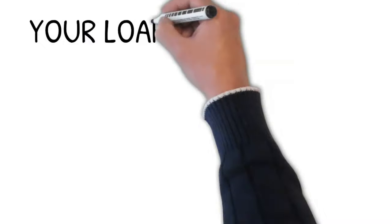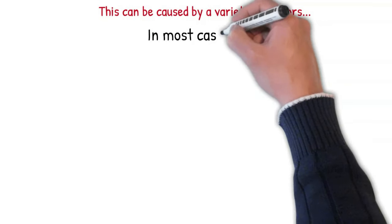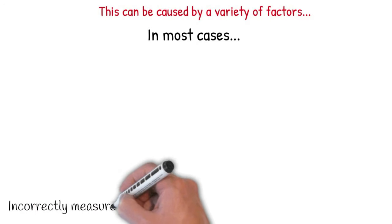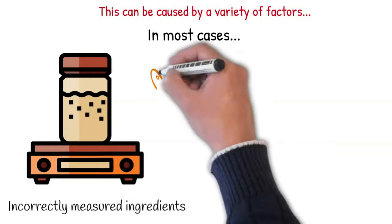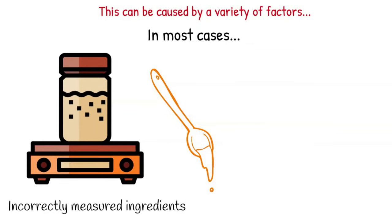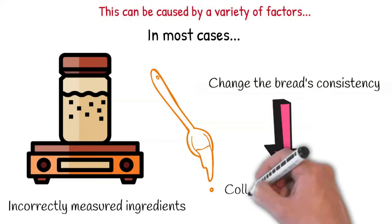Your loaf has collapsed or sank in the middle. This can be caused by a variety of factors. In most cases, it is incorrectly measured ingredients, especially yeast. Just a small spoonful of more or less of an ingredient is enough to change the bread's consistency and if it would collapse in the middle.